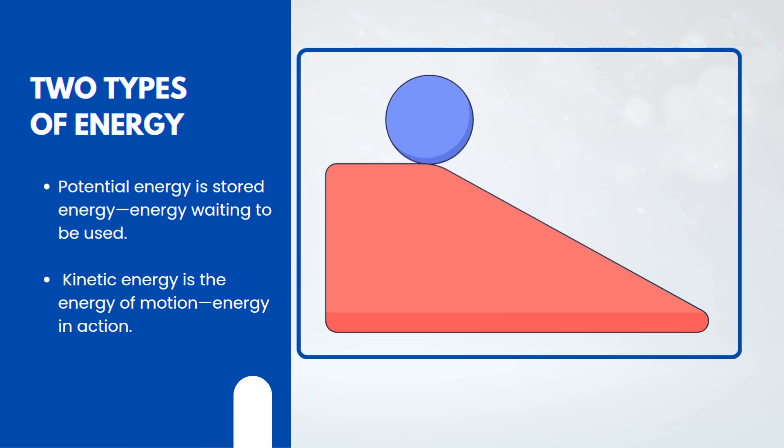Potential energy is stored energy, energy waiting to be used. Kinetic energy is the energy of motion, energy in action. Together, they make up mechanical energy.